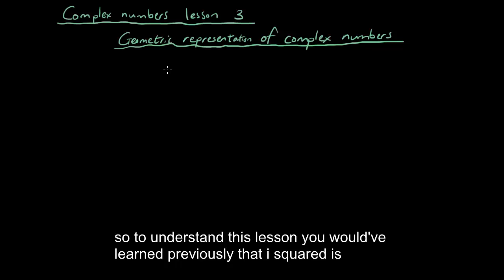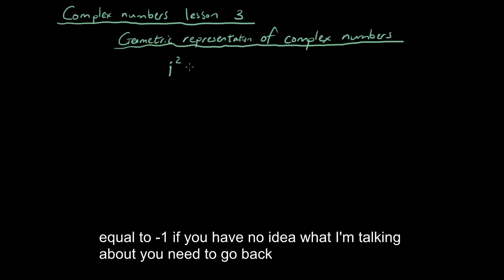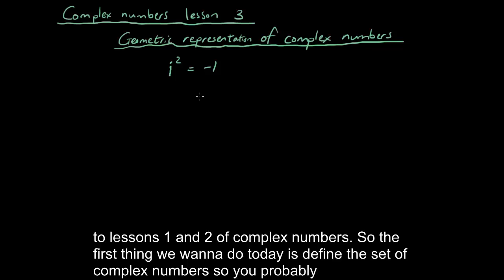So to understand this lesson, you would have learned previously that i squared is equal to negative 1. If you have no idea what I'm talking about, you need to go back to lessons 1 and 2 of complex numbers. So the first thing we want to do today is define the set of complex numbers.